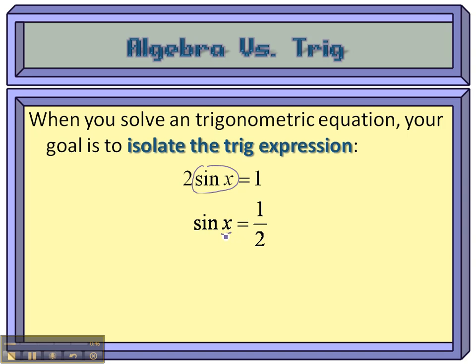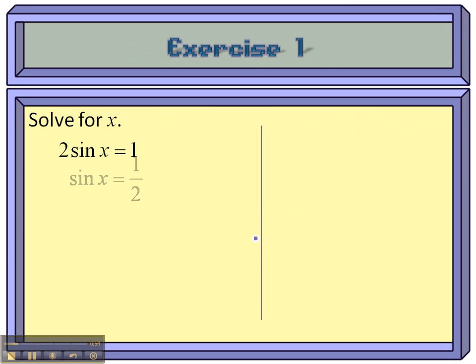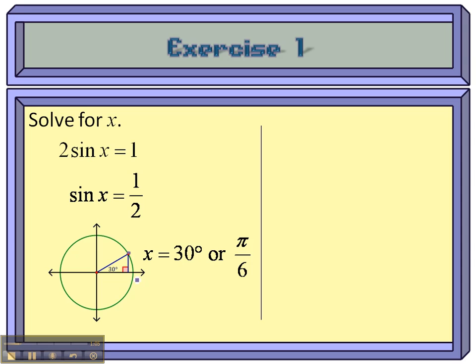Now you have to work backwards and find this angle measurement that gives you a sine value of a half. So let's draw ourselves a unit circle. The sine is the y-coordinate, the point on the unit circle. At a half, that's at 30 degrees or π over 6.